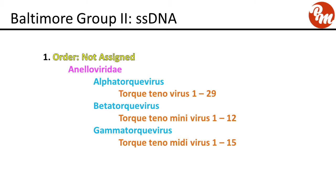The first viral family is Anelloviridae, with order not assigned. Anelloviridae has genus alpha-torque virus (species torctenovirus 1 through 29), beta-torque virus (torctenomini virus 1 through 12), and gamma-torque virus (torctenomidi virus 1 through 15).